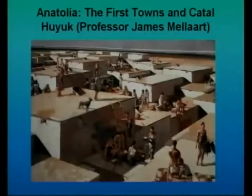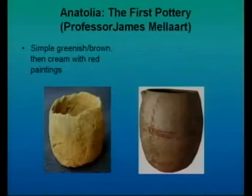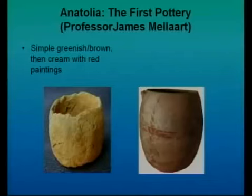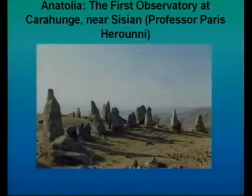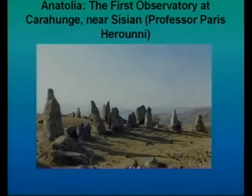The first towns appear in the same region. Catalhoyuk is also very well known — Professor James Mallart did a lot of excavation work in the 1960s onwards. They reckon that was the beginning of the first towns. We also find the first pottery spreading from that place throughout the ancient world, the first simple observatory for astronomy at a place called Karahunj near Sissian, and the first religious temple excavated at a place called Gobekli Tepe — again, in the same area. The people who study language have also concluded that the first proto-language, the original language, was in the same region.